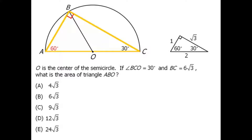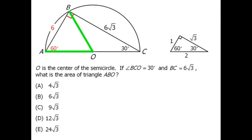Comparing to our base 30-60-90 triangle, the side opposite the 60-degree angle is root 3 in the base triangle. In our triangle the corresponding side has length 6 root 3, meaning our triangle is 6 times larger. So side AB must have length 6. Sides AO and BO are both radii of the semicircle, so they are equal, giving us an isosceles triangle with the top angle also 60 degrees. Calculating the third angle gives 60 degrees, so all three angles are equal — this is an equilateral triangle and all three sides have equal length.